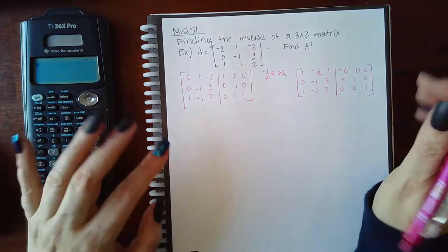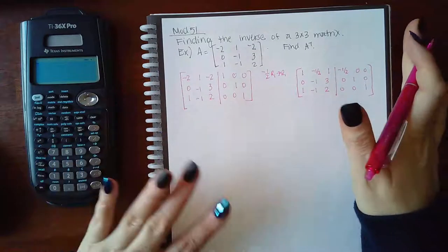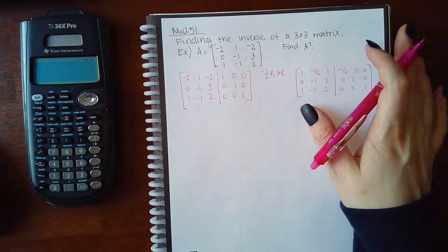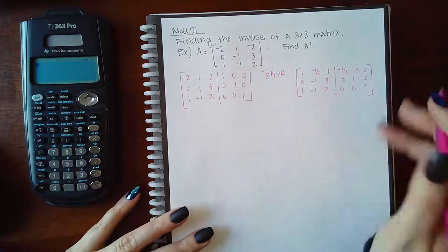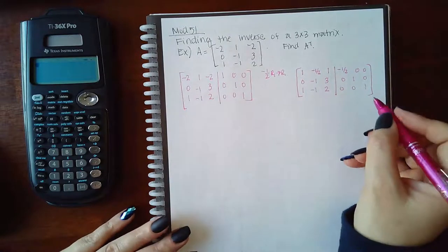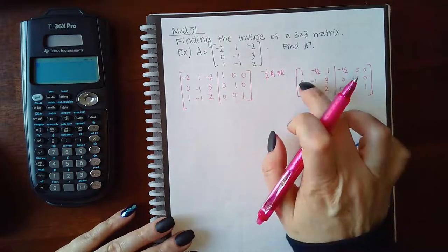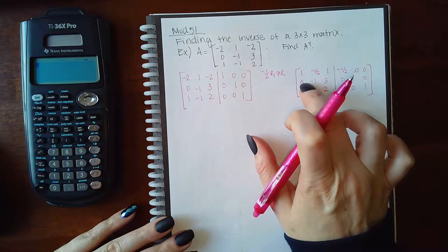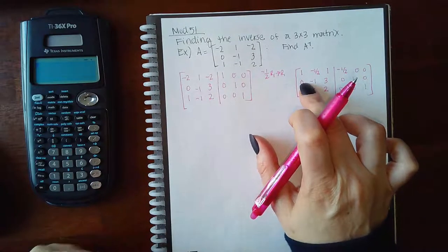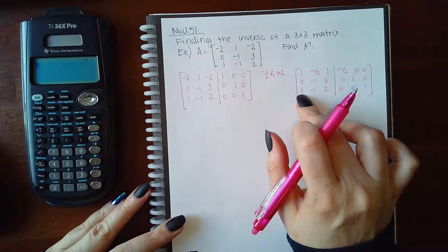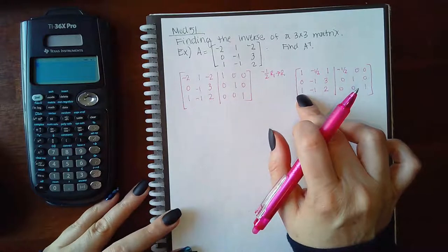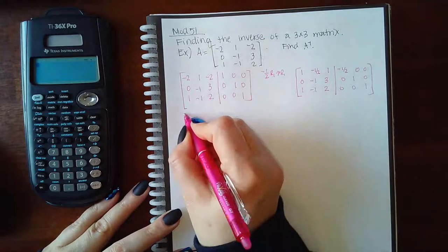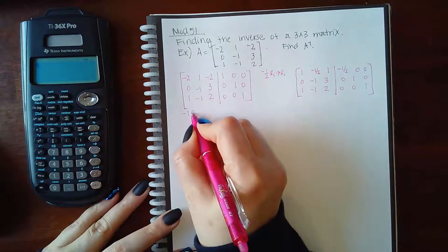The hardest part is making sure you copy everything correctly — not necessarily the operations, but just making sure you don't make any mistakes when writing things down. My next job is to use that leading one to eliminate the term below it to zero. It's already good to go there, so then eliminate the next term to zero.